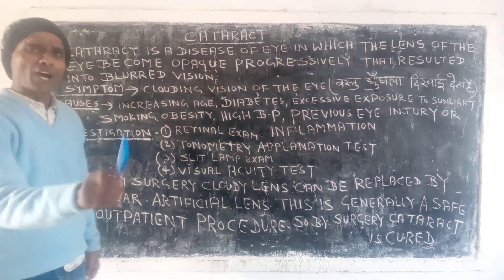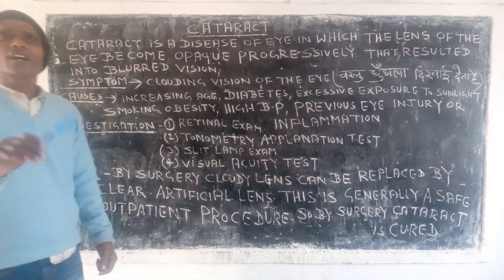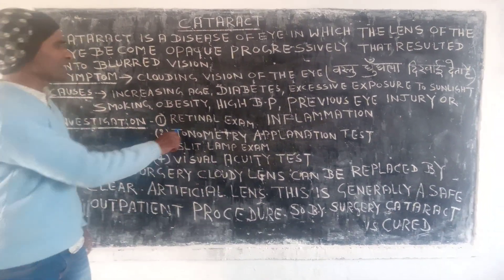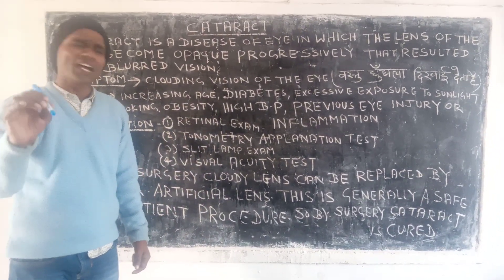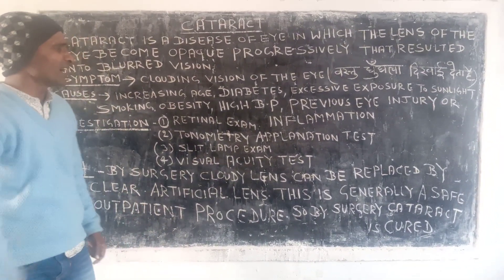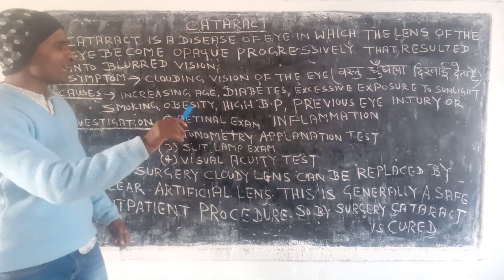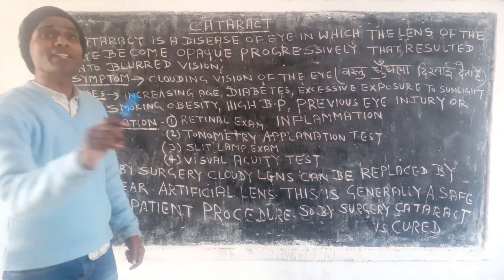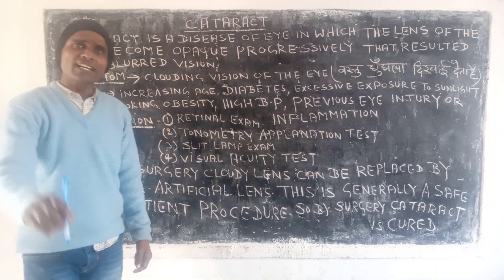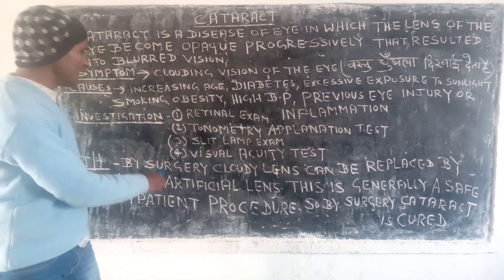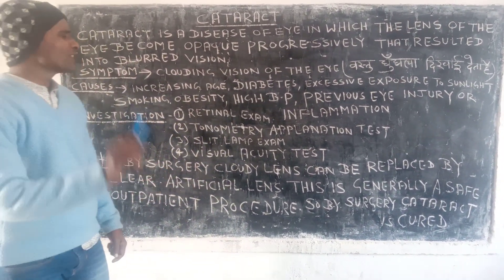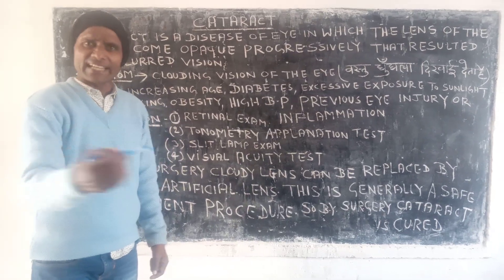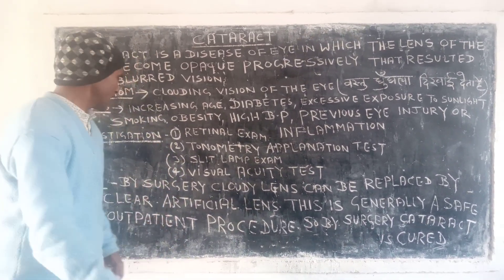For the investigation of cataract: first, retinal examination is done; second, tonometry application test; third, slit lamp examination — slit lamp examination is performed; fourth, visual acuity test — visual acuity test is done to determine the extent of cataract.